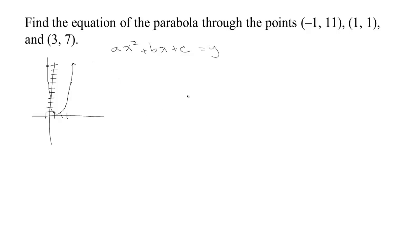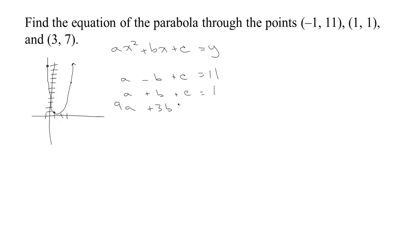We're going to use a system of three equations and three unknowns. If I substitute negative 1 for x, I know that 11 should come out for y. Negative 1 squared is 1, so we get 1·a, and b times negative 1 is negative b, plus c equals 11. The next equation: plugging in 1 for x gives us a plus b plus c equals 1. And our third point says plugging in 3 for x gives 7 for y — 3 squared is 9 — so 9a plus 3b plus c equals 7.